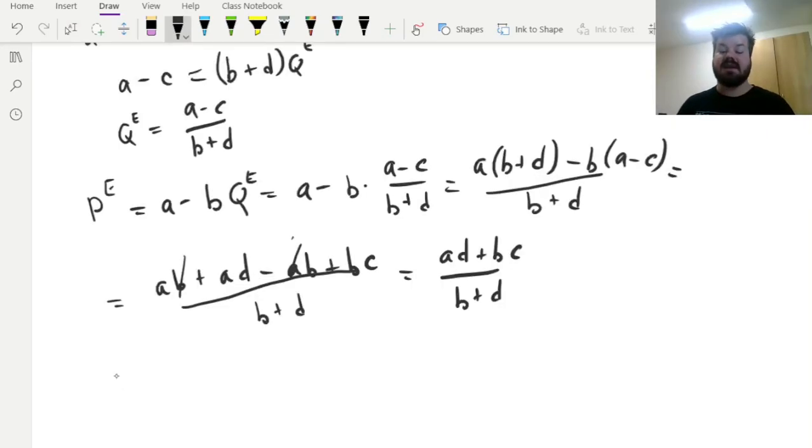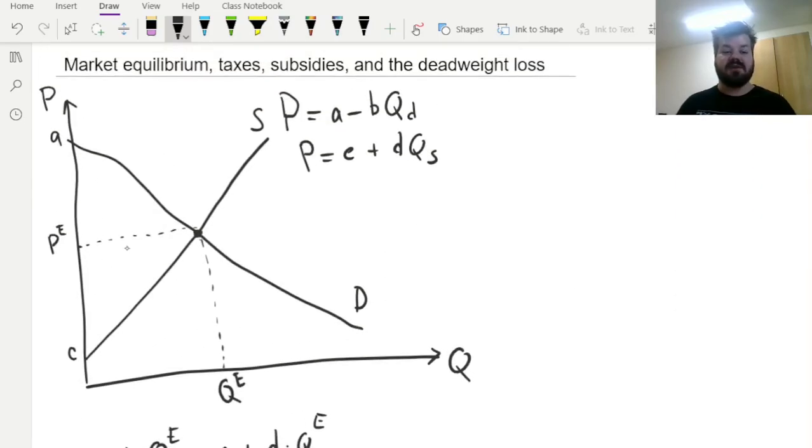And next, let's calculate the producer surplus and the consumer surplus, remembering the insights we have just learned. So basically, what is producer and consumer surplus? Well, those are just the areas of the triangles that are formed by the equilibrium price and the demand and supply curves, as those are maximum reserve prices and those are minimum reserve prices for consumers and producers respectively. The surplus would be the difference between what you were willing to pay and what you actually ended up paying.